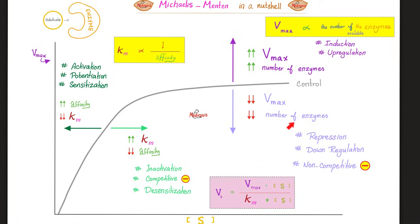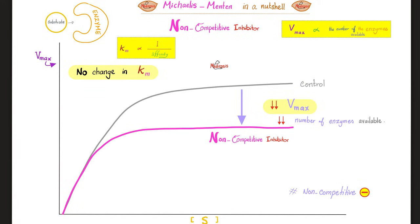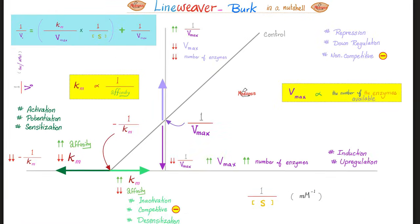On the Michaelis-Menten plot — substrate concentration on the x-axis, rate of reaction on the y-axis — the non-competitive inhibitor decreased the number of enzymes available to bind the substrate, and therefore Vmax went down. Adding the non-competitive inhibitor, the Vmax decreased from the original point to a lower point. But did the curve shift right or left? No. The S did not change, i.e., the Km did not change, because the affinity did not change.